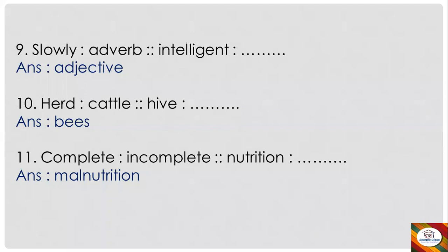Next: 'slowly' is an adverb as 'intelligent' is to dash. What kind of part of speech is 'slowly'? It's an adverb. And 'intelligent' — which part of speech is it? It's an adjective. We have eight parts of speech, and 'slowly' comes under adverb and 'intelligent' comes under adjective. So this is how you write it.